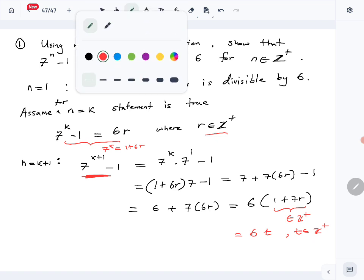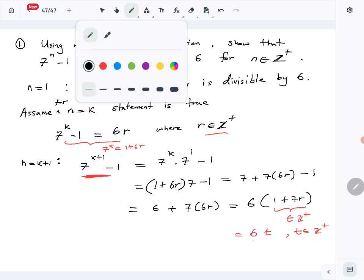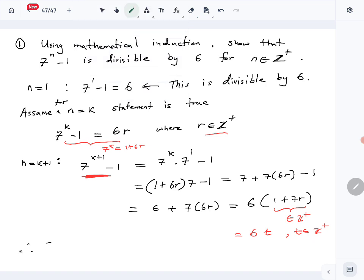Therefore, 7^(k+1) - 1 is divisible by 6. So we have the proof. Write the final statement: therefore, by mathematical induction.